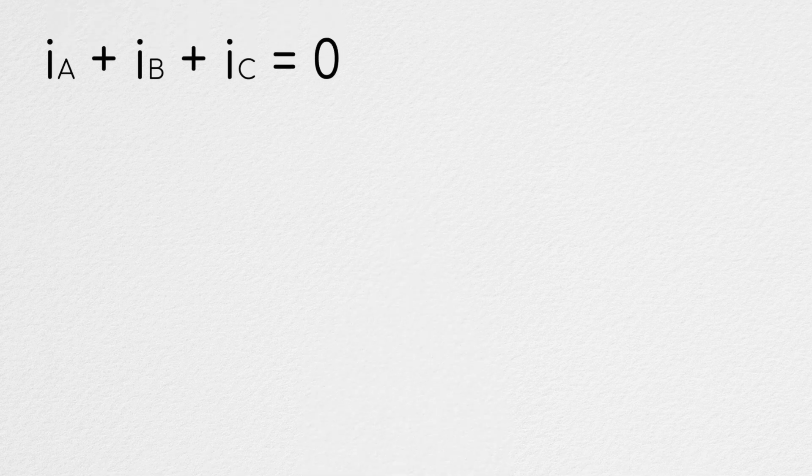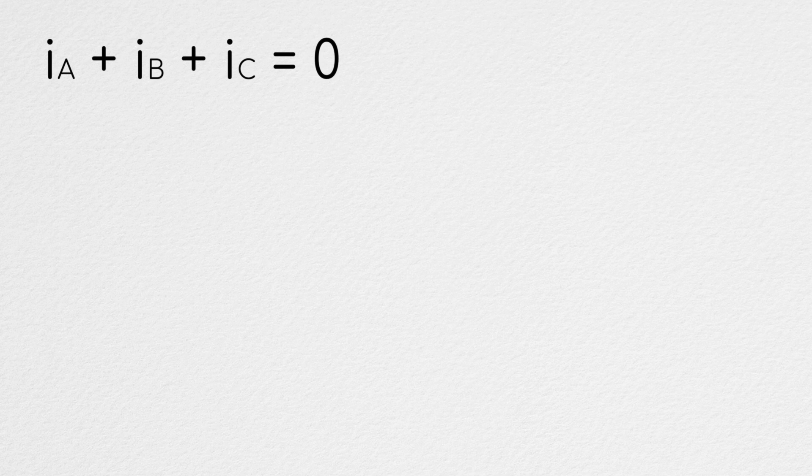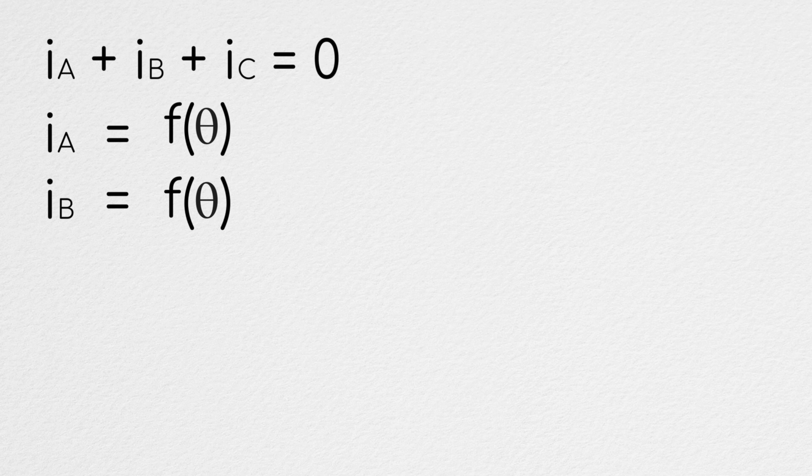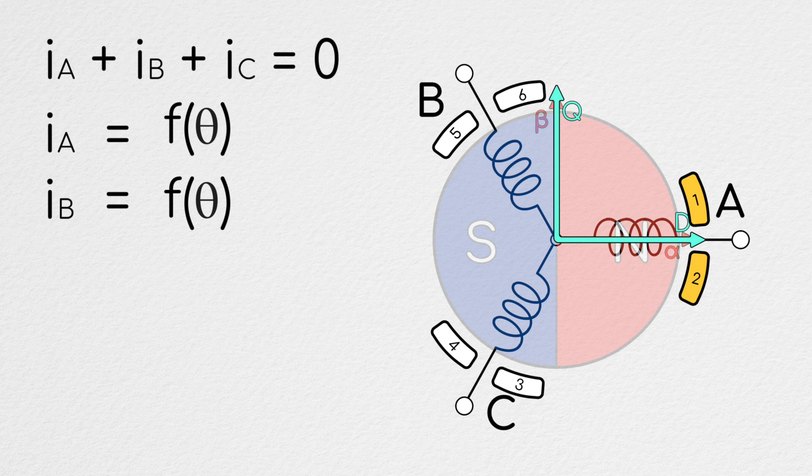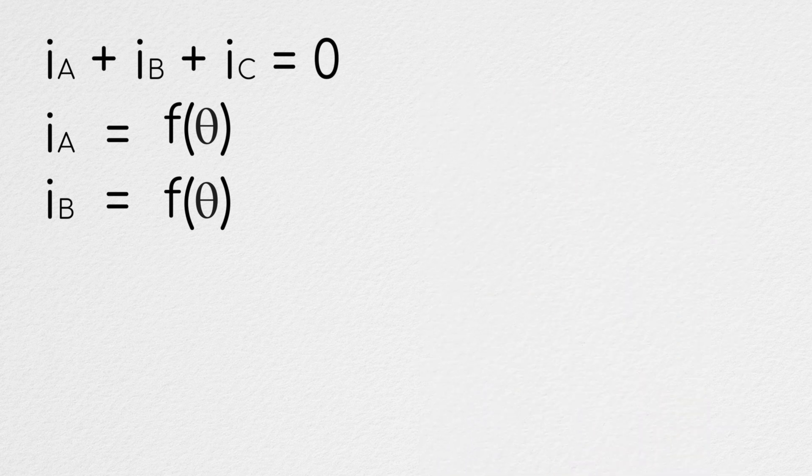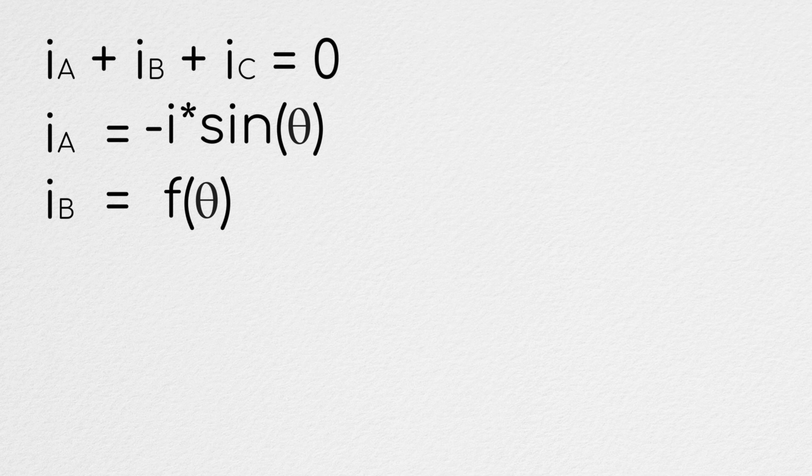Anyway, since this system follows Kirchhoff's current law, we can't define all three currents arbitrarily. So let's start by just defining two. We'll define the currents coming out of a and b as functions of theta, where theta equals zero corresponds to the d-axis being aligned with the alpha axis.